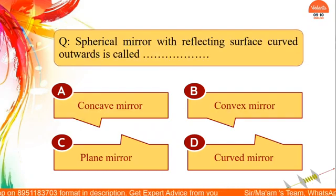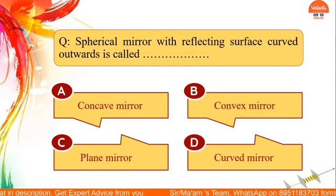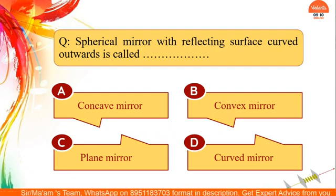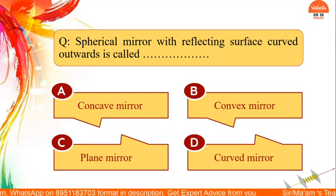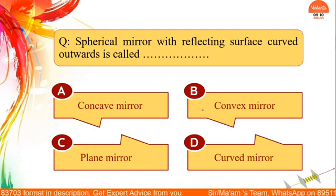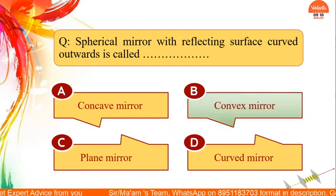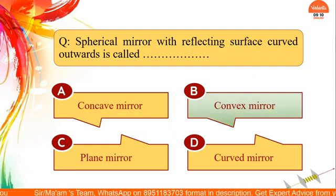Next question: a spherical mirror with reflecting surface curved outwards is called what? Options are concave, convex, plane, or curved. The answer is convex — a convex mirror is one where the reflecting surface is curved outwards and the inner surface is silvered.